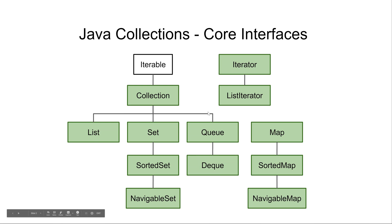Finally, we have the Iterator interface and the ListIterator interface. An Iterator enables you to iterate the elements of a collection in the forward direction. The exact order depends on the collection: if it is a List, you iterate in storage order; if it is a Set, order is determined by the Set implementation; if it is a SortedSet, you can affect the sort order yourself. The same is true for Queue, Deque, and Map implementations. With a SortedMap, you can iterate the keys according to their sorted order. The ListIterator, obtained from a List, enables you to iterate elements in both forward and backward direction.